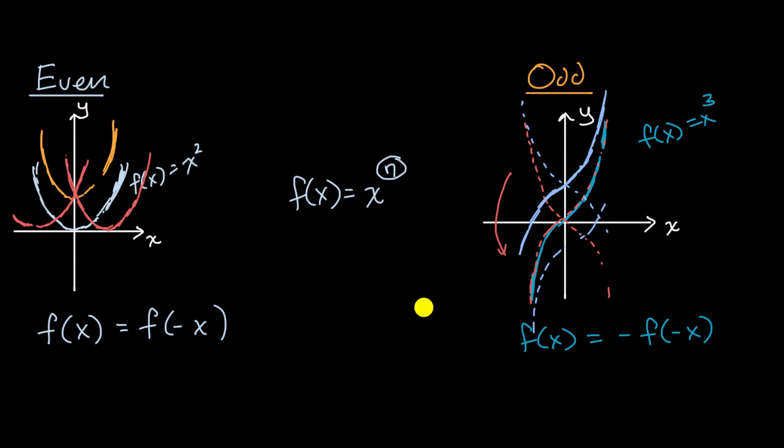Now an interesting thing to think about, can you imagine a function that is both even and odd? So I encourage you to pause the video and try to think about it. Is there a function where f of x is equal to f of negative x, and f of x is equal to the negative of f of negative x?